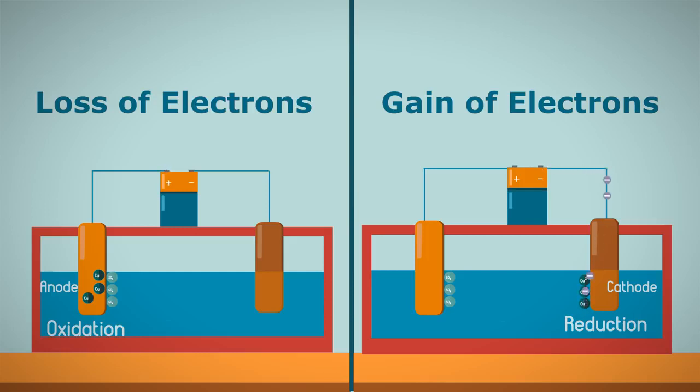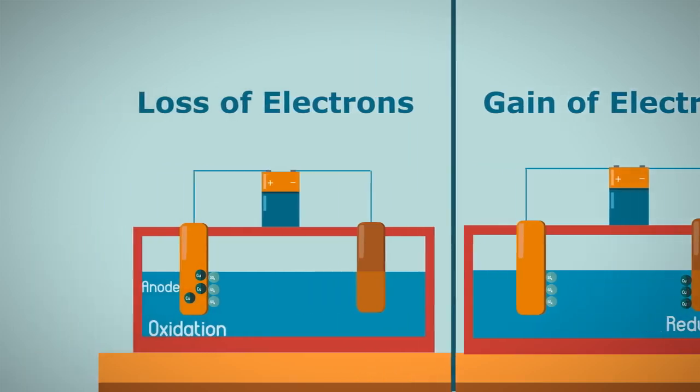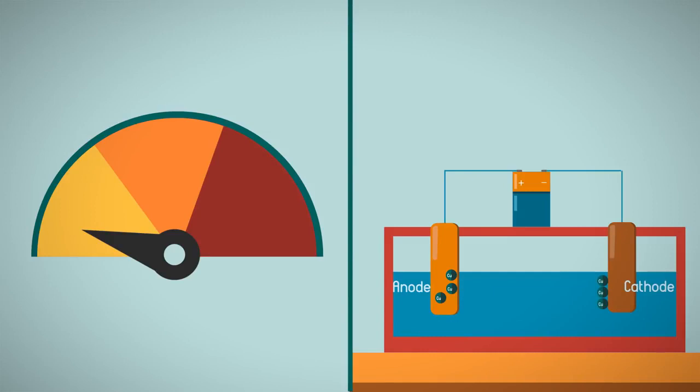So a few other things to consider in electroplating. The speed at which electroplating occurs depends only upon the strength of the electric current. A stronger current increases the speed at which the ions and electrons move through the circuit, speeding up the plating process. One way to increase the current is by increasing the concentration of ions in the solution.